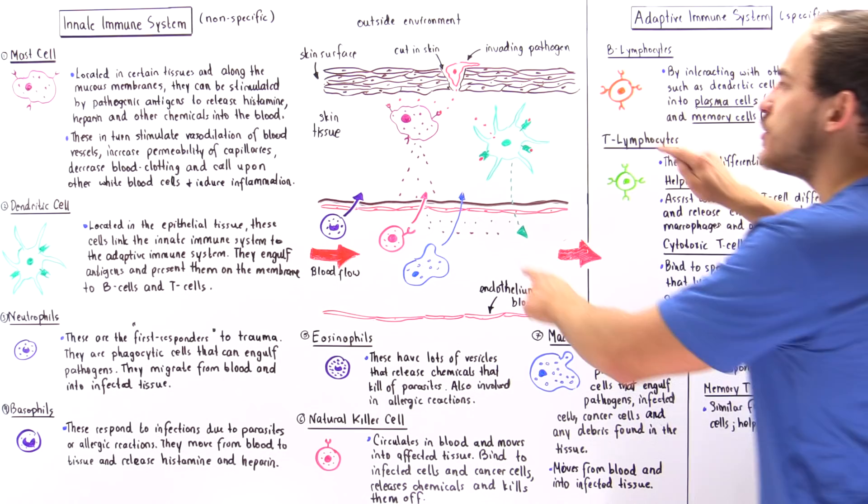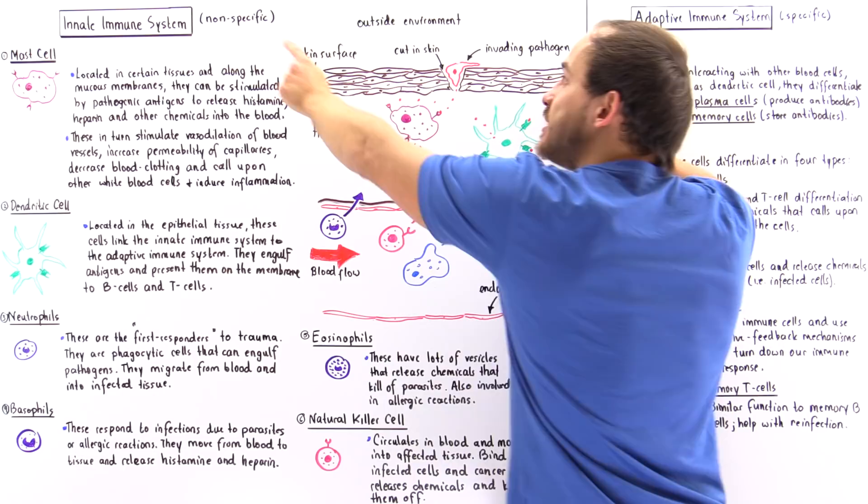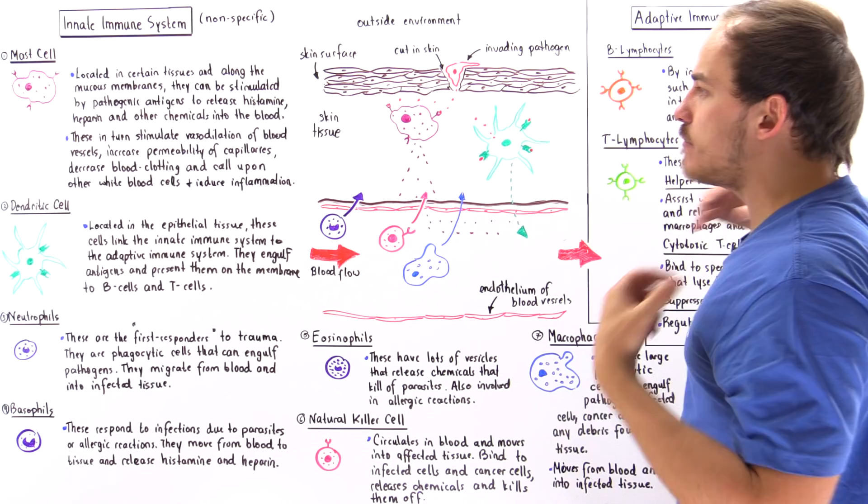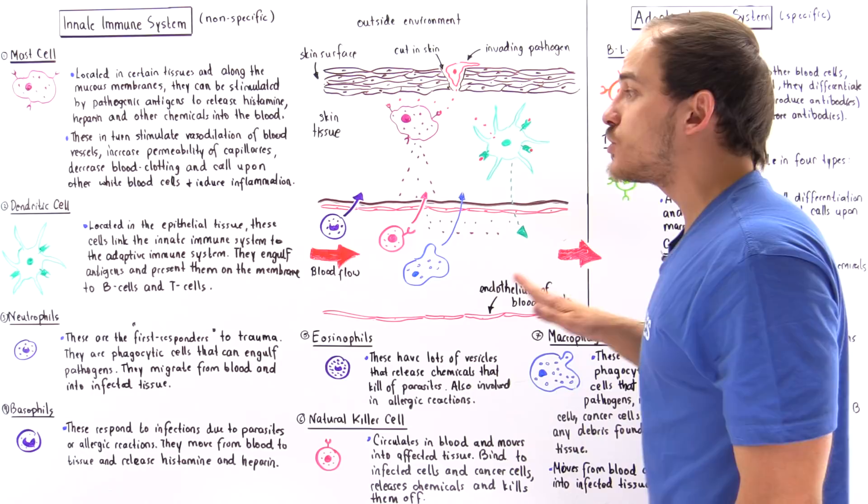The dendritic cell is capable of binding any antigen non-specifically, but it takes that antigen and brings it to the adaptive immune system. It is the dendritic cell that connects the innate immune system to our adaptive immune system.